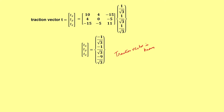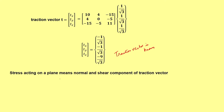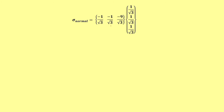Now we need to find out the normal stress. The stress acting on a plane means the normal and shear components of the traction vector. The normal stress sigma_n is the transpose of the traction vector multiplied by the normal vector. Doing the simple matrix multiplication, we get minus 11 by 3, that is −1 − 1 − 9 = −11/3. So the normal component of the traction vector is now known.